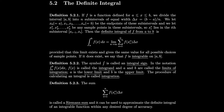We then let x0 equal a, x1, x2, all the way through xn equals b, be the endpoints of these subintervals. And we let x1 star, x2 star, all the way up to xn star, be any sample points inside these subintervals. So the xi star lies in the ith subinterval from xi minus 1 to xi.